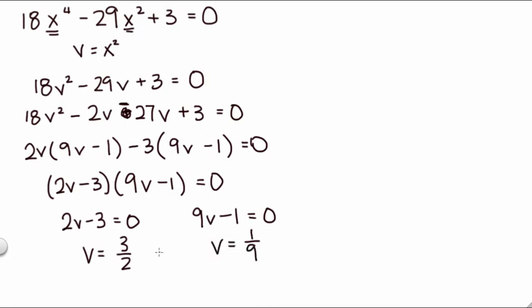Keeping in mind that v is x squared. So in other words, x squared equals 3 halves, and x squared equals 1 9th. So we have to take the square root of both sides. So we get x equals plus or minus square root of 3 halves, and then x equals plus or minus square root of 1 9th.